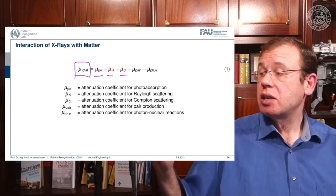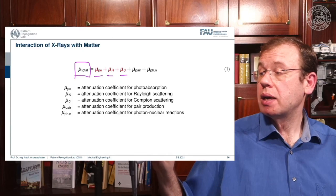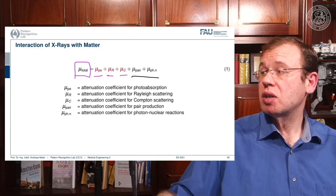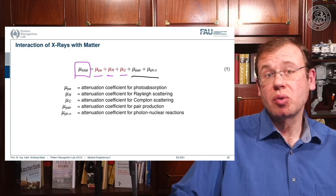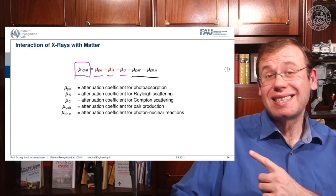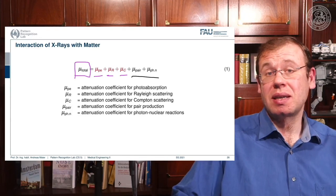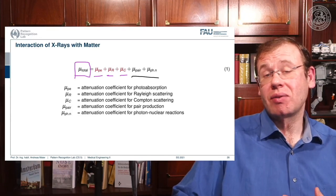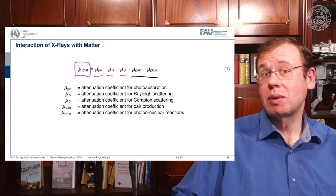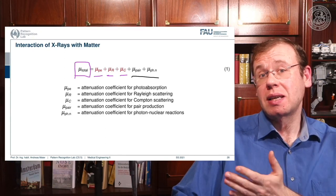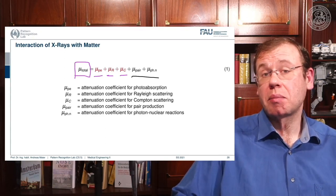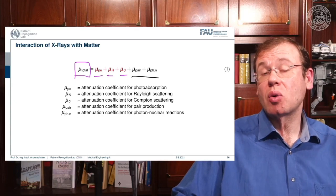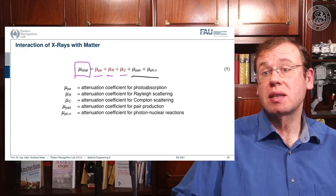There are additional coefficients that might play a role — absorption caused by pair production and photon-nuclear reactions — but these don't happen at the energies used in x-ray imaging. They occur beyond 200 kilovolts and above, so we don't need to consider them here. Let's focus on the three relevant effects for x-ray imaging.